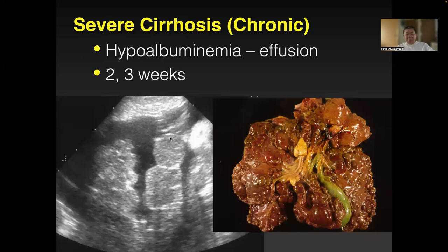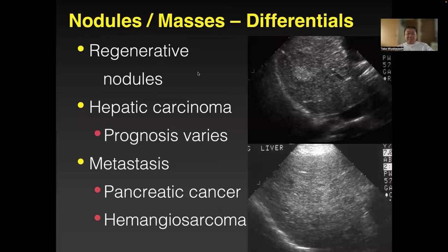For hypoechoic liver with liver cirrhosis — albumin is low, ascites — the images look irregular. This may be after end-stage disease. The dog might live two to three weeks. Consider euthanasia. In Japan it's hard to do, but think about the owners — they don't want to see the dog really suffering.